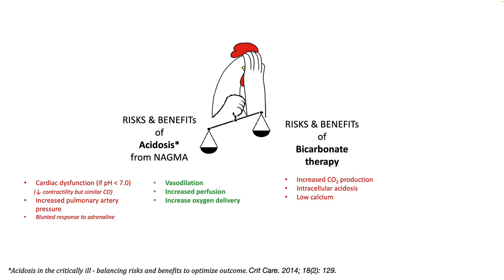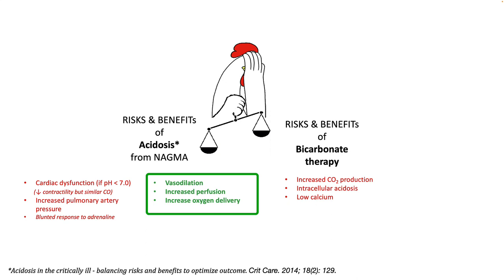Whenever you initiate bicarb therapy, assess the risk and benefit of acidosis from non-anion gap and the risk and benefit of bicarb therapy. A pH less than 7 can result in cardiac dysfunction — it can decrease contractility, but researchers have not found a change in cardiac output despite low pH. Acidosis can increase pulmonary artery vasoconstriction and therefore elevate PA pressures. Low pH can also result in a blunted response to adrenaline, seen at pH less than 7.1. However, there are advantages to acidosis: it causes vasodilation, which can increase perfusion and maintain cardiac output, and it increases oxygen delivery to tissues, which is very important in critically ill patients. Giving bicarb results in increased CO2 production, so ventilation must be adequate; it can cause intracellular acidosis with poorer outcomes, and it can lower ionized calcium and therefore cause hypotension.